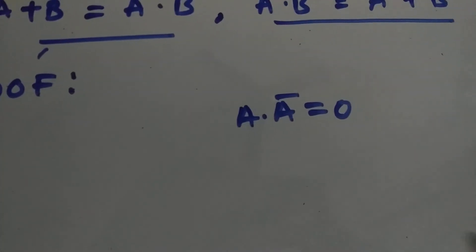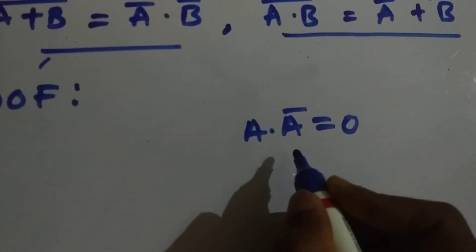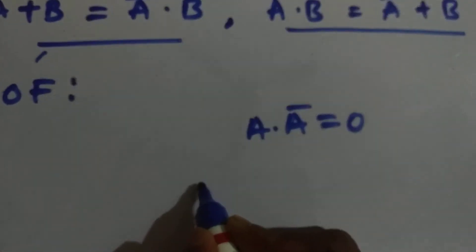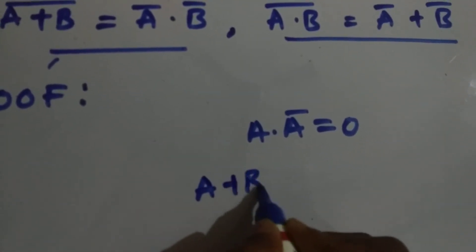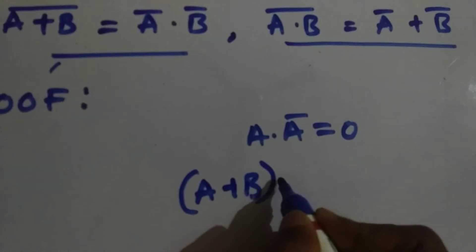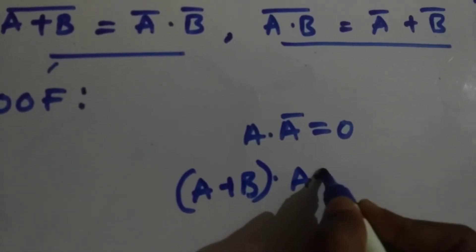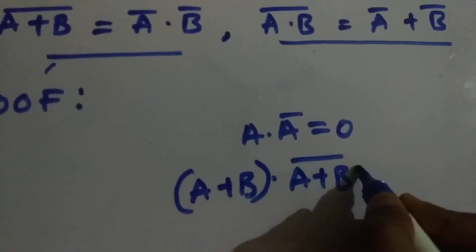Similar fashion. A is a variable here and A bar is its complement. Let's take the variable as A plus B again, similar process, and its complement is A plus B whole bar, which equals 0.